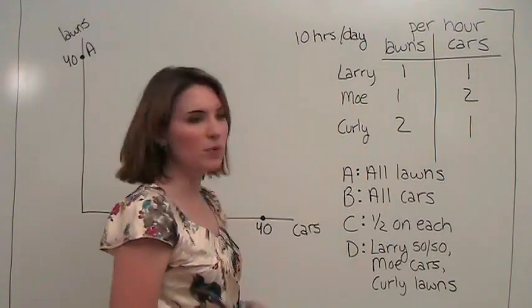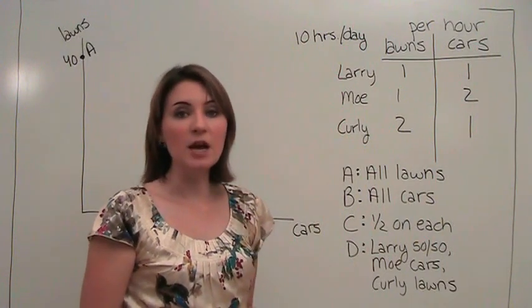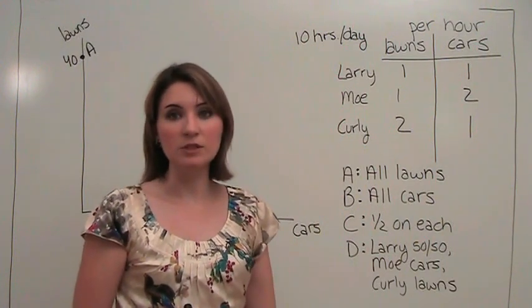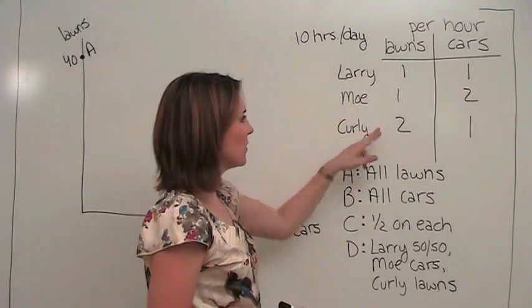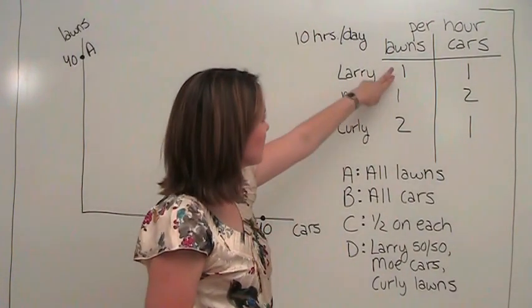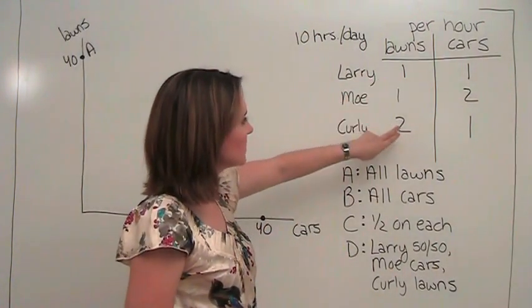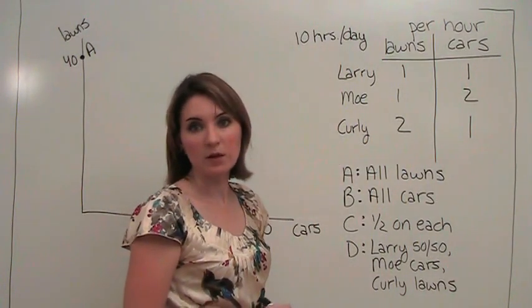Let's think about point C. If each of these guys is spending half of their time mowing lawns and half the time washing cars, how many of each activity gets done? Here we would get five lawns, five lawns, ten lawns for a total of twenty lawns.